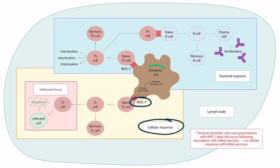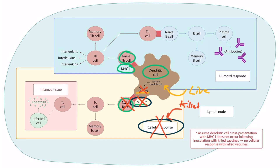Going back to this image, it's safe to assume the dendritic cell will use MHC class 2 to activate naive helper T cells and MHC class 1 to activate naive cytotoxic T cells. However, when it comes to vaccines specifically, the pathogen must be alive — a live vaccine can infect the dendritic cell to allow MHC class 1 presentation and activate naive cytotoxic T cells, whereas a killed vaccine cannot.